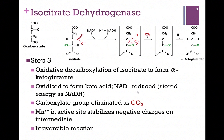Starting with isocitrate, a six-carbon compound, one of our goals is to extract two carbon atoms as CO2, and we do the first of those steps in this reaction. We extract the carboxyl group shown in red and also oxidize the hydroxyl group at position four to a carbonyl group, so overall this reaction is an oxidative decarboxylation. In the first step, we oxidize the OH to form the carbonyl, and the electrons extracted are passed to NAD+, giving us our first NADH product. That intermediate in brackets is then rapidly decarboxylated — the carboxyl is a very good leaving group — and we pick up a proton to form our final product, alpha-ketoglutarate.